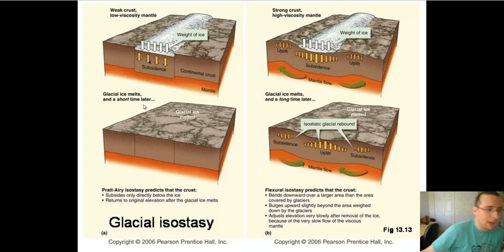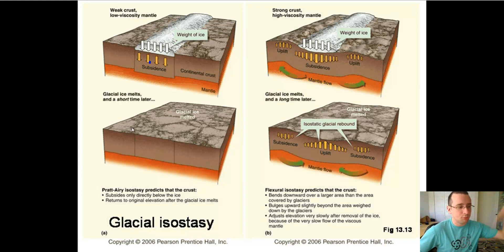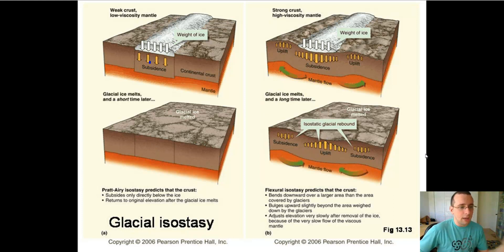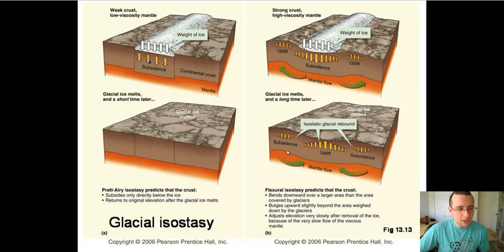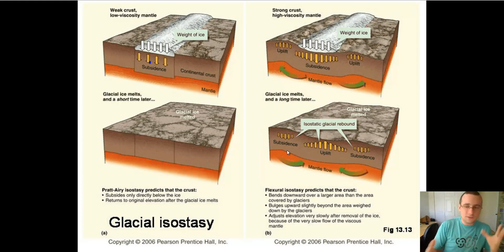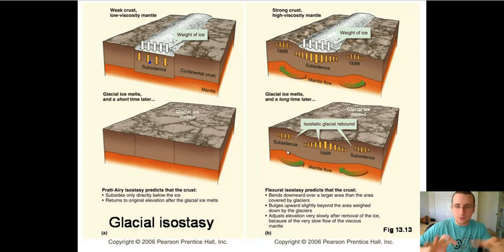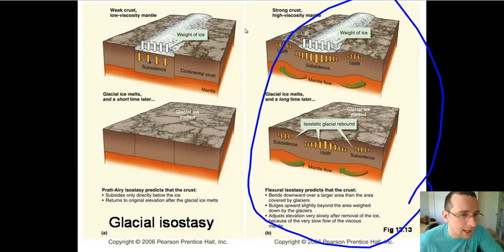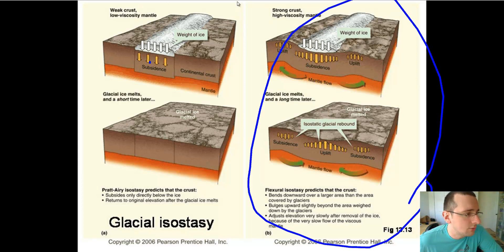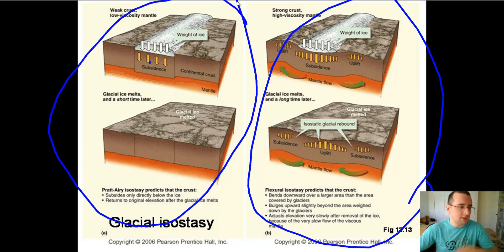After the ice melts over a long period of time, the opposite happens: uplift of what was previously subsided, producing flat ground. But if the mantle was more fluid, you get uplift of the middle and subsidence of the sides. You can see how uplift and subsidence work together to change the shape of the earth over long periods of time. The rocks in these regions will be under tension — some were folded, while others cracked — all because of differences in the viscosity of the mantle.